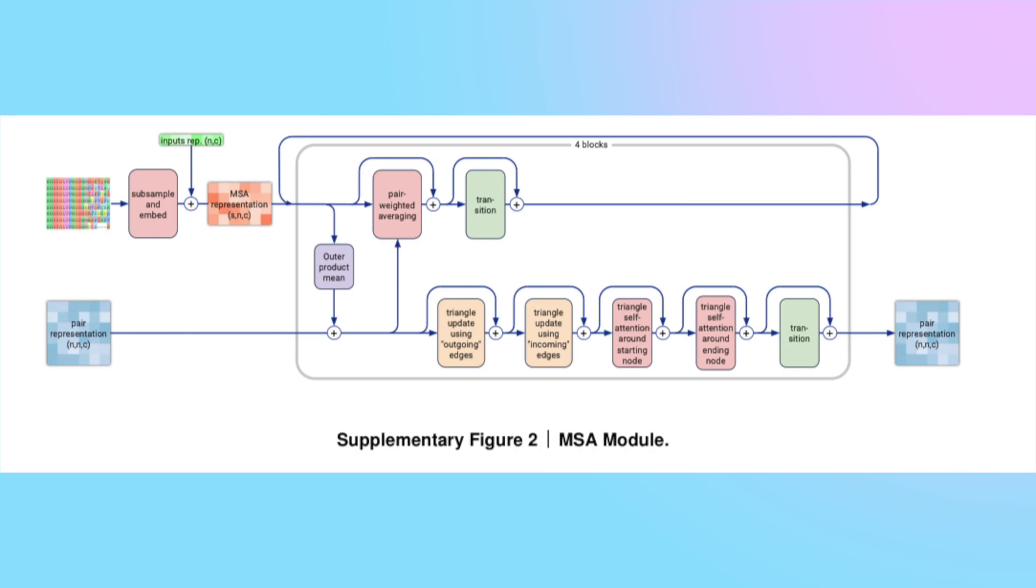So you can see this in this module called the MSA module. So this module's task is it's the only one that gets to see the full MSA, and it's supposed to try and squeeze that information into the pair representation. But you can see in this module itself that you barely do anything to the MSA, whereas you do all of these attention-like mechanisms for the pair representation.